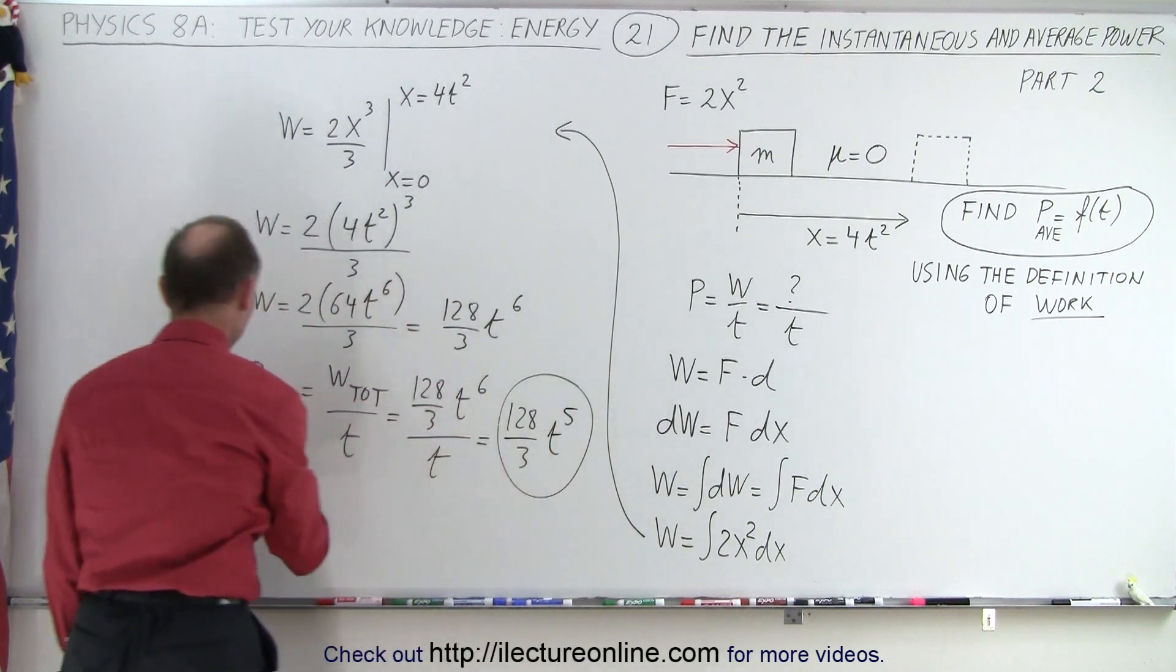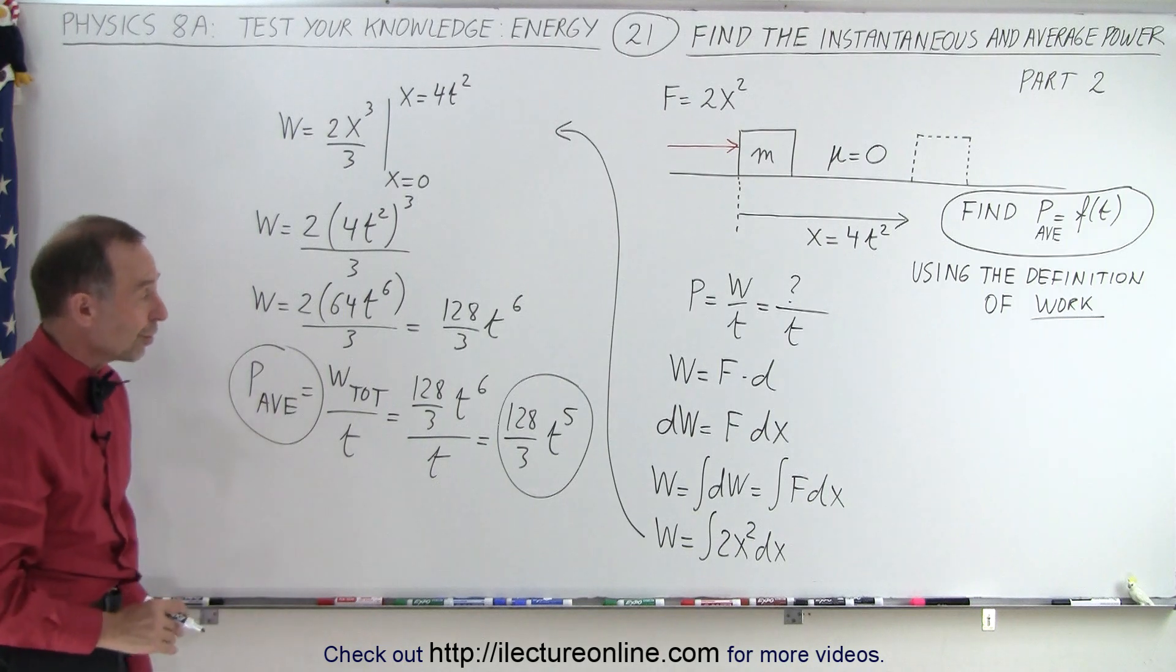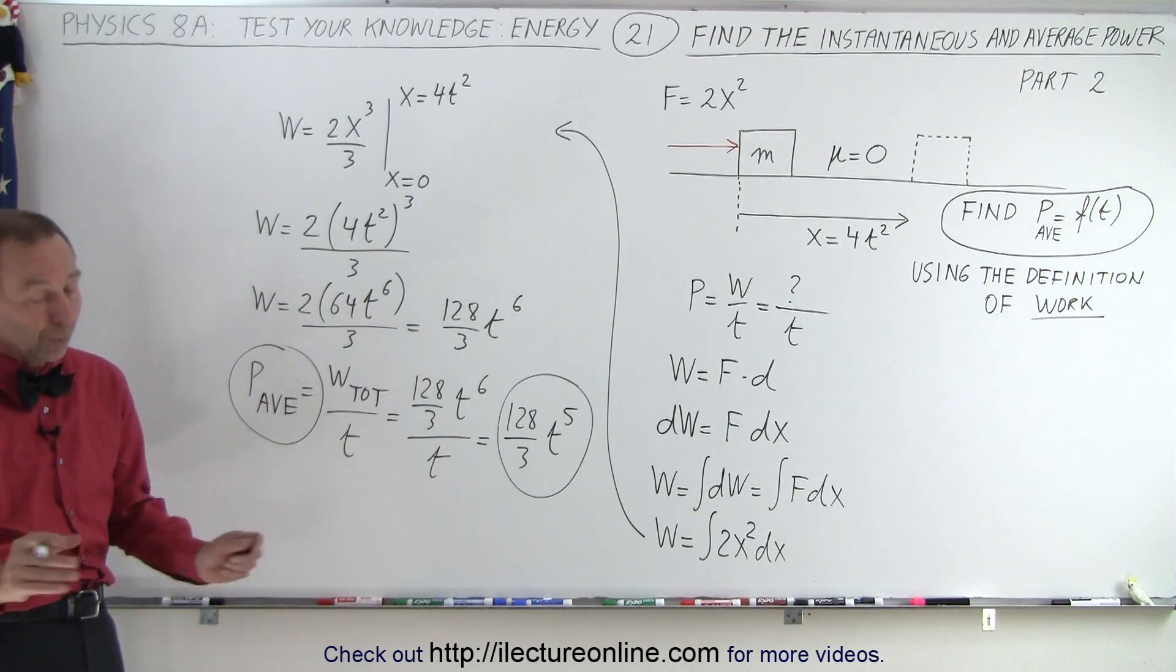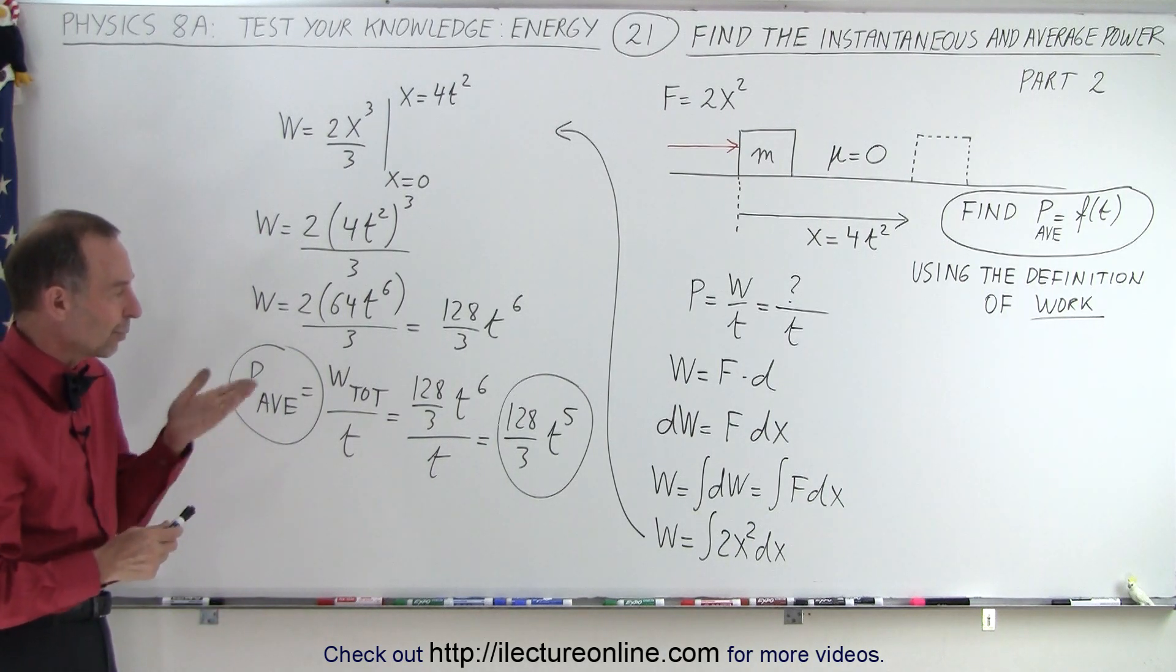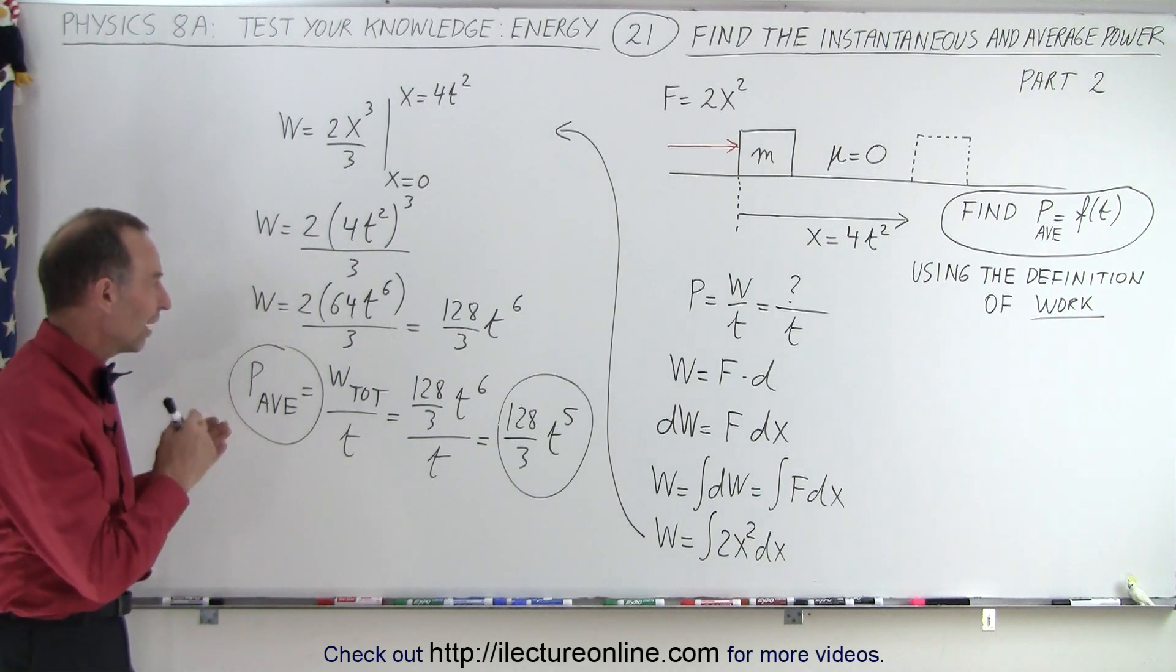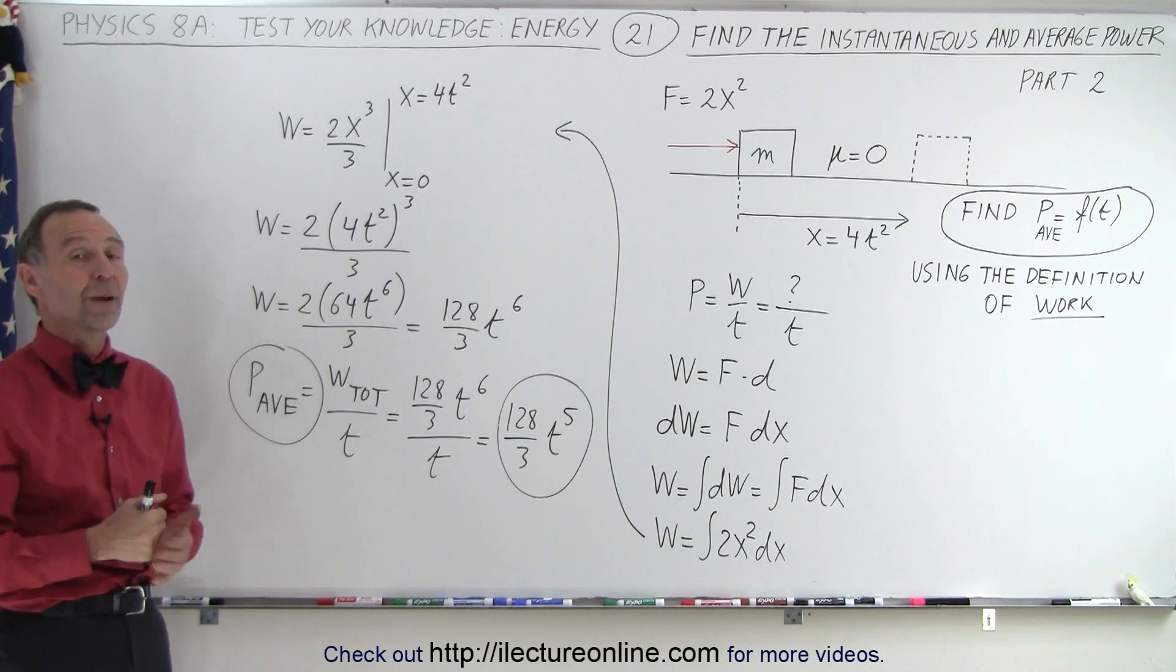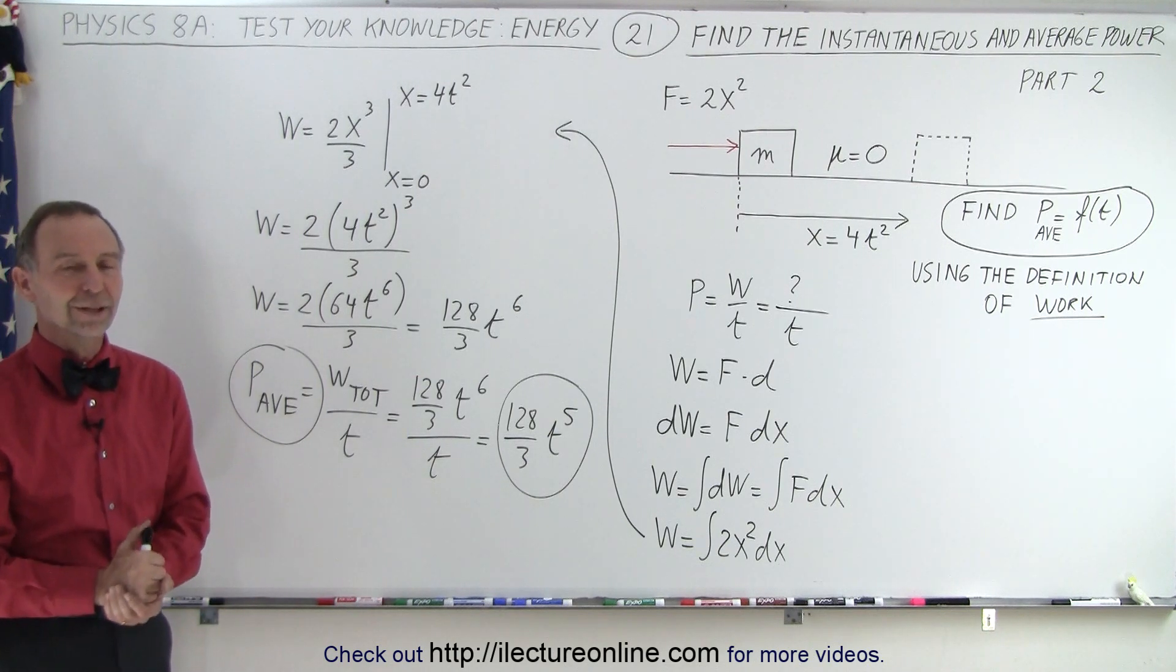And yes, indeed, that was equal to the average power that we found on the previous video. The exact same result, that's what we'd expect, of course. But this time, we did it by using the definition of work and integrating the total work done divided by the total time taken, which by definition, then, is the average power. And that is how it's done.